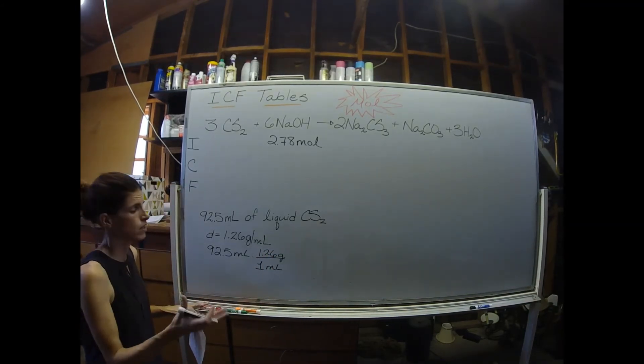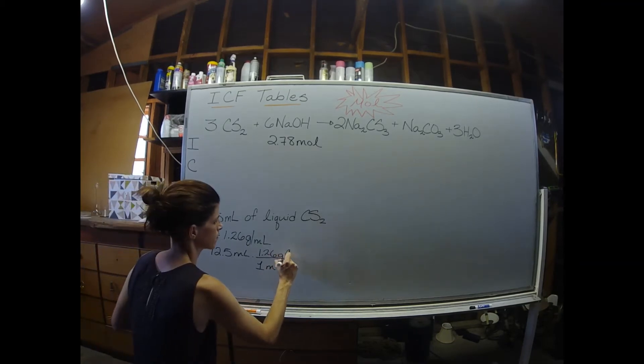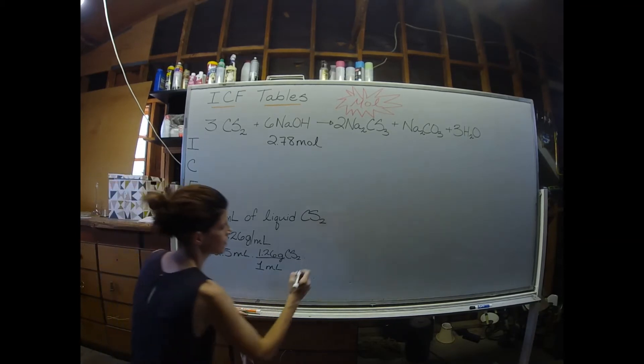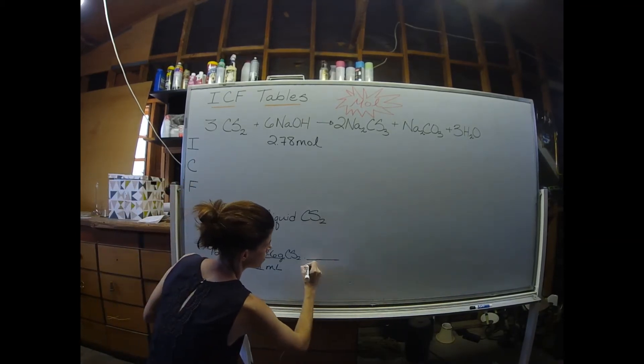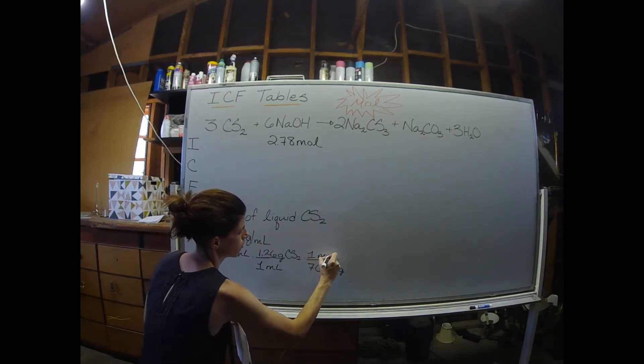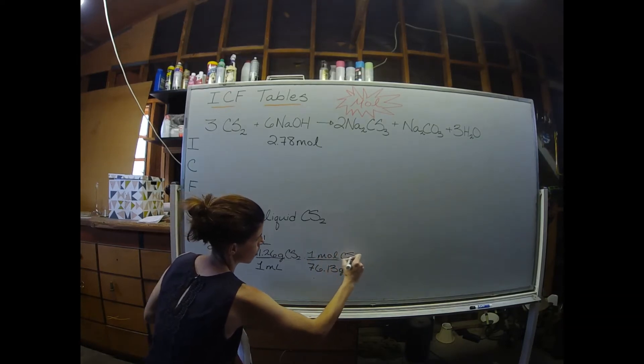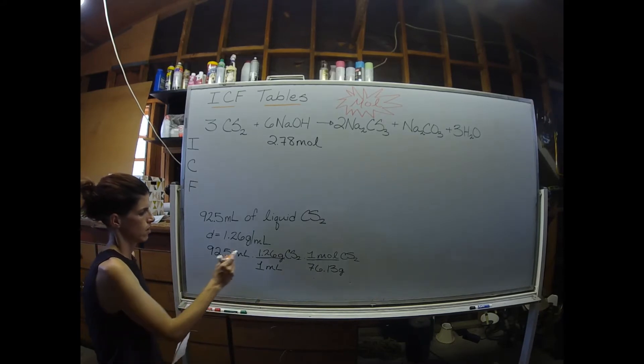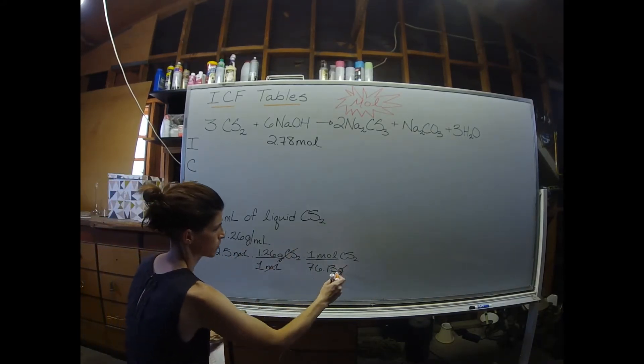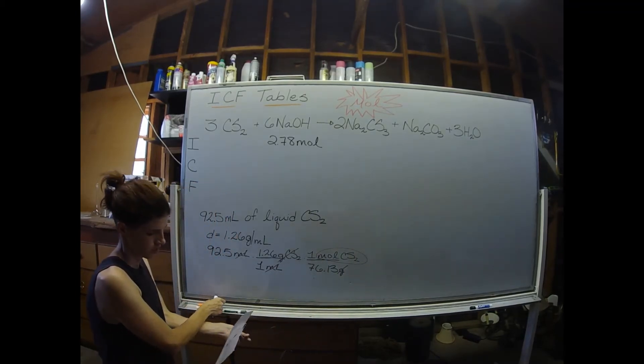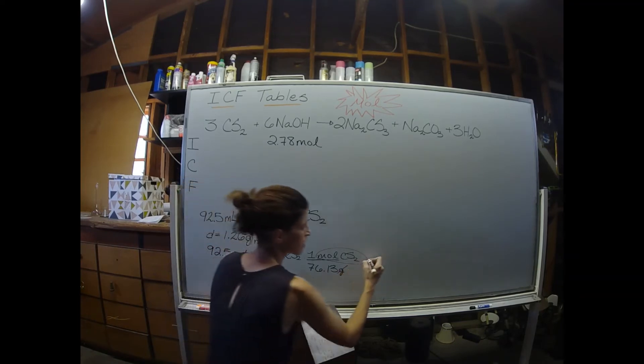And then from there, we can use our molar mass. So there are 76.13 grams of carbon disulfide in one mole of the carbon disulfide. So units will cancel - mils will cancel, grams with grams, leaving us with moles of that other reagent.